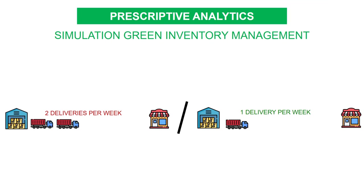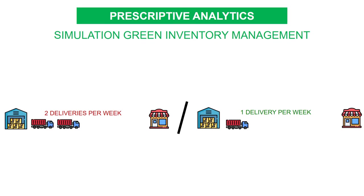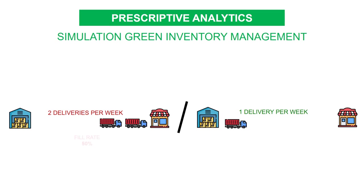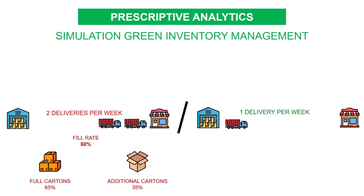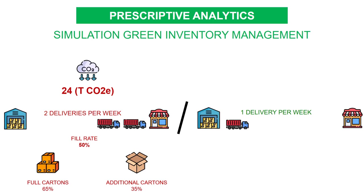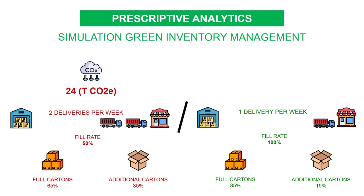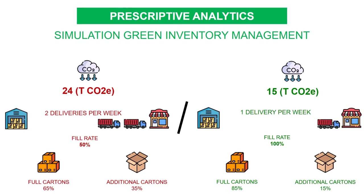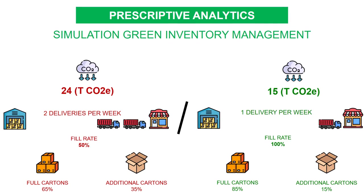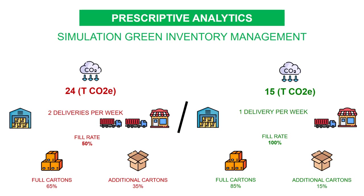Let's look at the green inventory management problem: what is the optimal frequency of replenishment to reduce your footprint? Currently, you deliver your stores twice per week. Because of this high frequency, the truck filling rate is only 30%, with a high proportion of mixed cartons, resulting in CO2 emissions of 24 tons. After simulation of delivering once per week, you discover you can reach 100% fill rate — stores order more per replenishment with a higher proportion of full cartons — and the impact on the overall footprint is huge. Based on this analysis, you can draft a prescriptive model that sets the optimal order frequency to minimize the footprint of your distribution network.